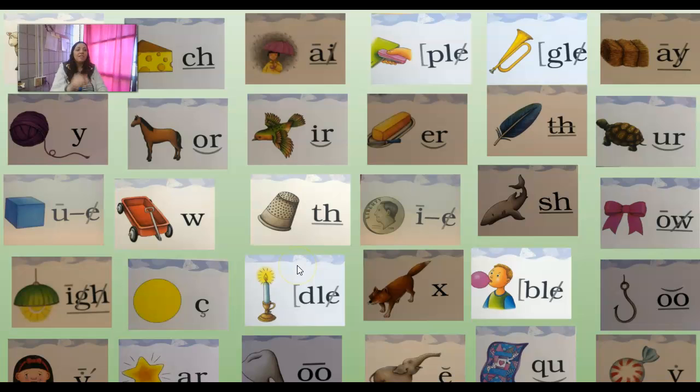Light I trigraph IGH, circle S cedilla C soft C, very good. Candle DL final syllable DLE, box X X, bubble BLE, hook U digraph OO, cry I vowel Y, star R combination AR, tooth U digraph OO, elephant E, quilt Q combination QU, candy E vowel Y.